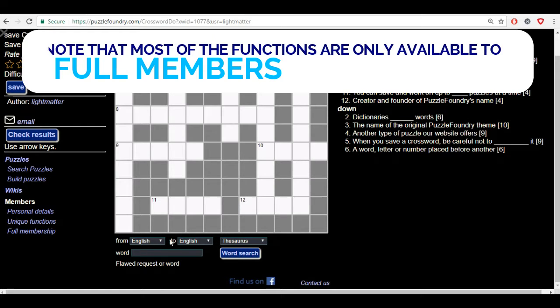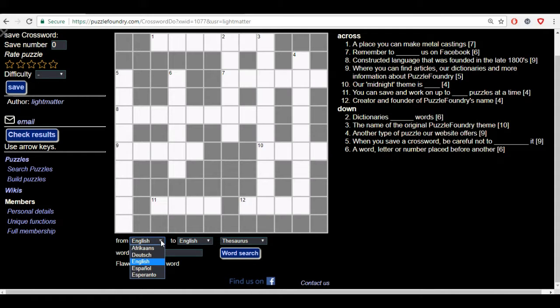This is a little translation function and we have five languages you can move between, which is Afrikaans, Dutch, English, Espanol and Esperanto.